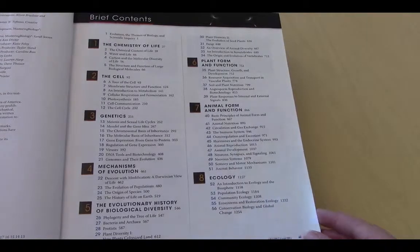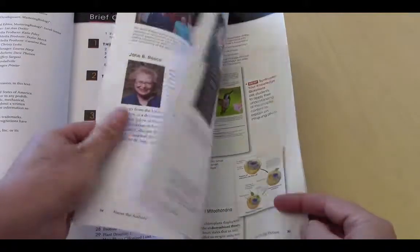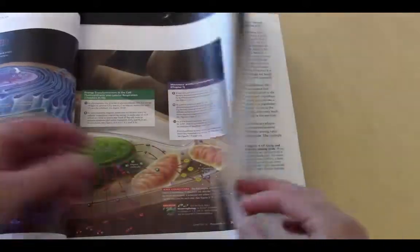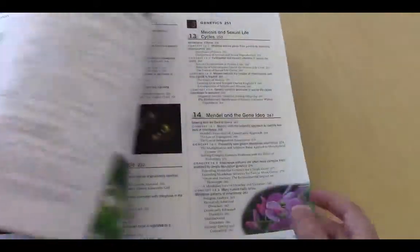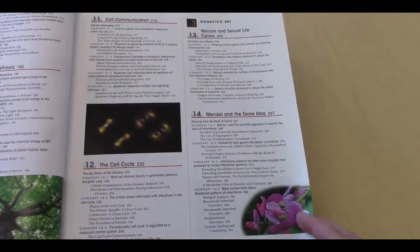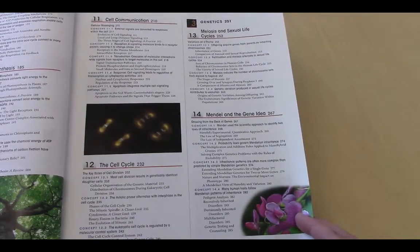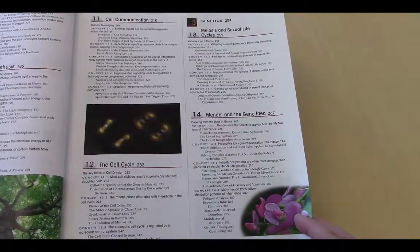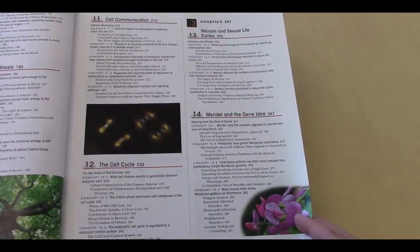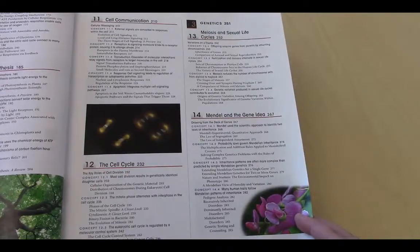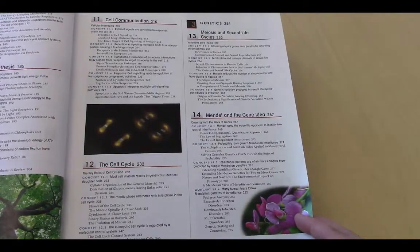You'll notice there's a brief table of contents that gives you a general outline of the book. And a few pages later, you'll see that there's a more detailed table of contents that even gives you the key concepts from each chapter. And so looking at the detailed table of contents can be a great way to preview the chapter or also to review what you've done before.